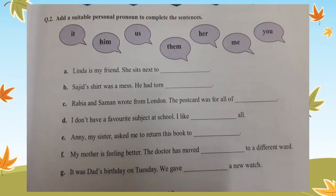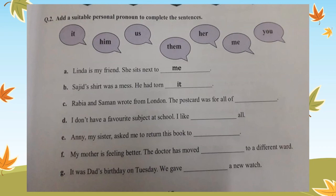Now let's look at question number 2: add a suitable personal pronoun to complete the sentences. In this question we have to add object pronouns. The object pronouns to be used are: it, him, us, them, her, me, and you. 'Linda is my friend. She sits next to blank.' The answer is 'me' — she sits next to me. 'Sarjit's shirt was a mess. He had torn blank.' The thing that is a mess is the shirt, so we replace shirt with 'it' — he had torn it.